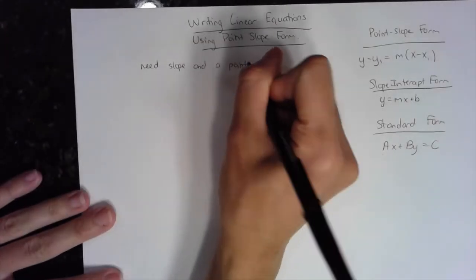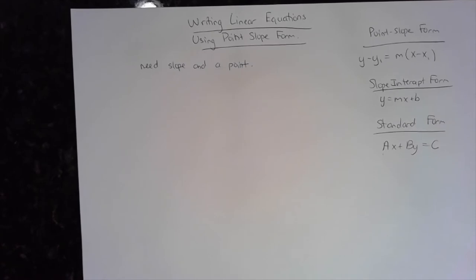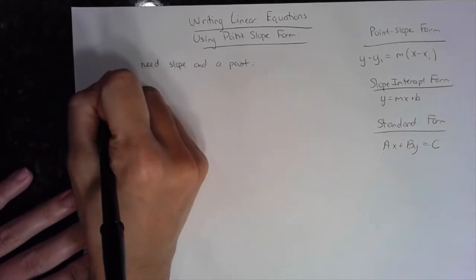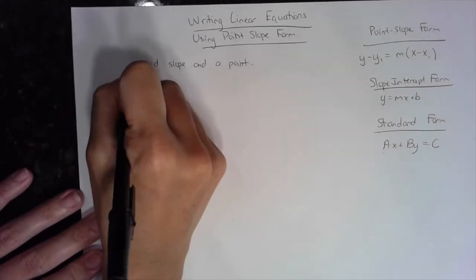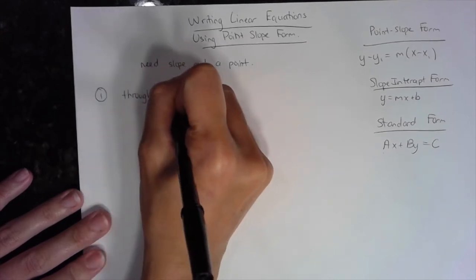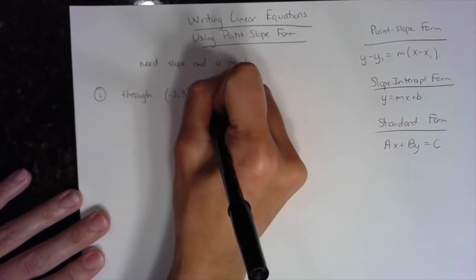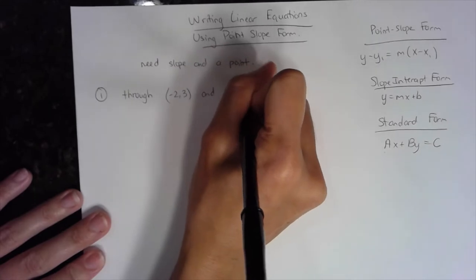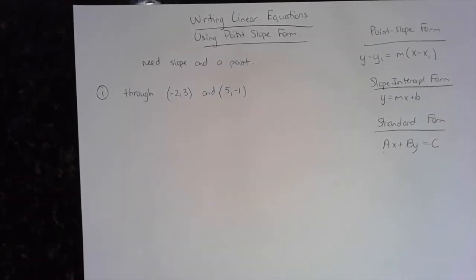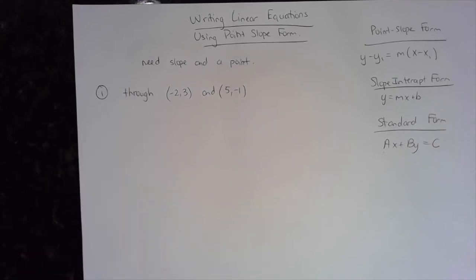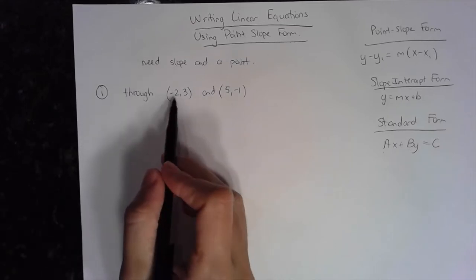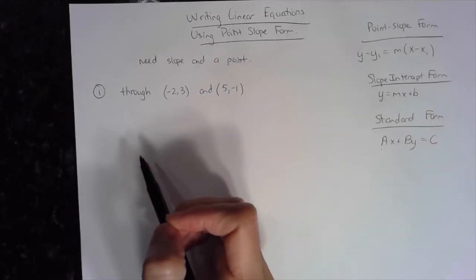You could be given the slope and a point, you could be given two points, or you could be given some information about the slope — for example, perpendicular or parallel lines. Let's start with: write the equation of the line through the points negative 2, 3 and 5, negative 1. Neither one of these points is special because there's no 0 as an x-coordinate — if 0 were the x-coordinate, we'd have a y-intercept.